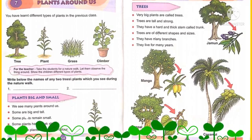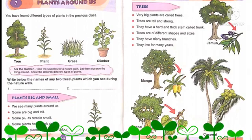Very big plants are called trees — that all of you know. Trees are tall, strong, and they have a hard and thick stem called a trunk. Trees are of different shapes and sizes, and they have many branches. They live for many years. Examples: mango, peepal, coconut, jamun, etc.